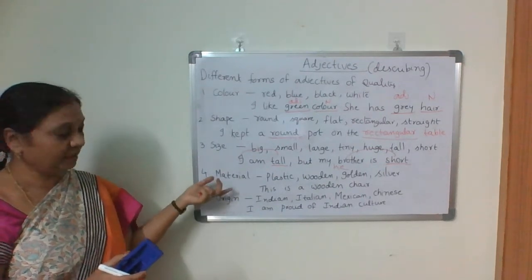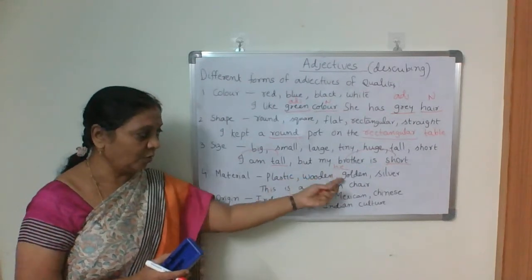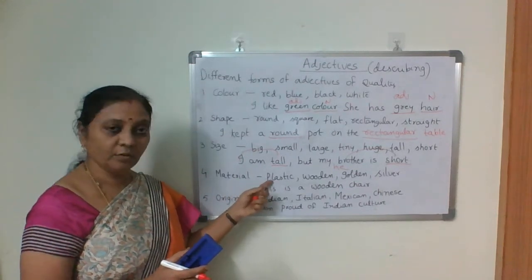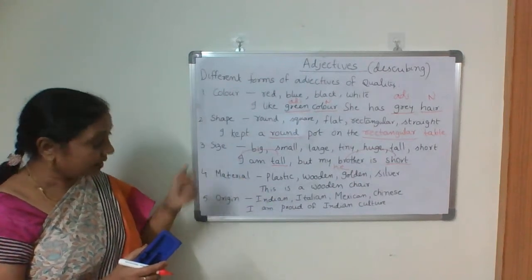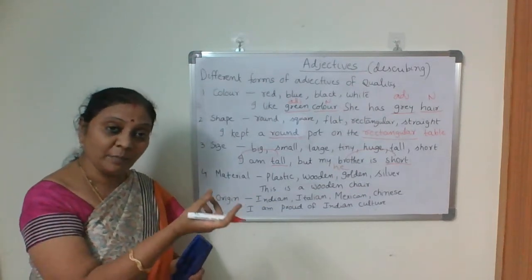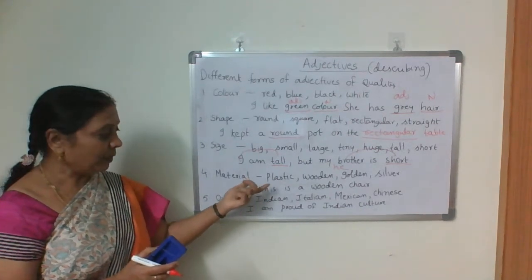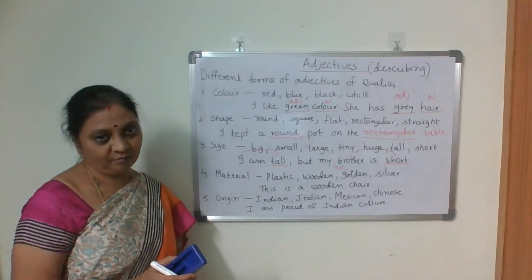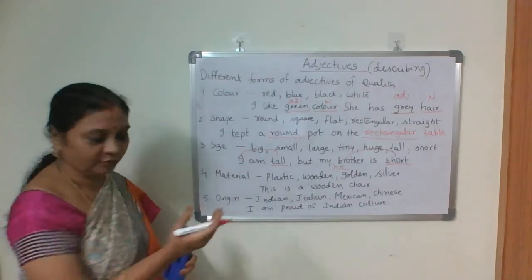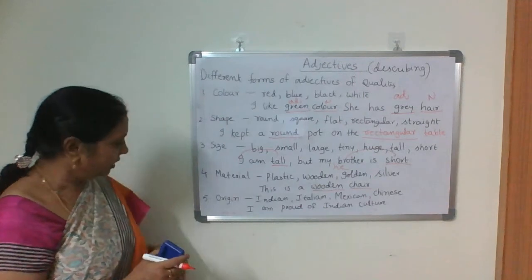Then there are adjectives of material — like plastic, wooden, golden, silver. For example: 'This is a wooden chair,' 'It is a golden bangle,' 'silver ring,' 'plastic chair.' To describe the nouns, we use materials. Chair is a noun and wooden becomes an adjective.